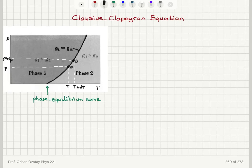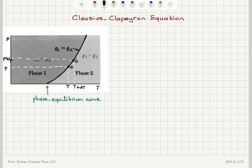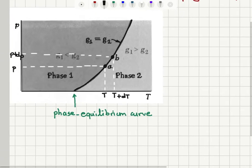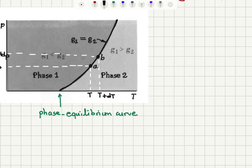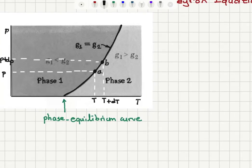For the coexistence of two phases, the Gibbs free energy per molecule on the two sides of the phase equilibrium curve must be the same — g1 equals g2 defines the phase equilibrium curve. This is the set of pressure-temperature value pairs for which the Gibbs free energy per molecule is equal. Infinitesimal changes in g1 and g2 must also be the same along this curve.